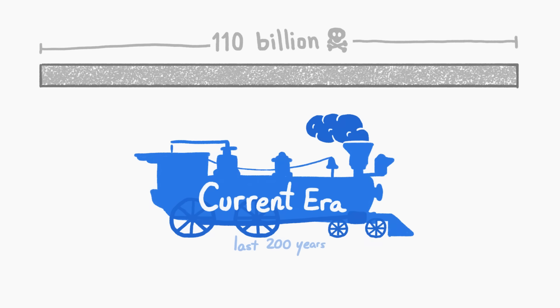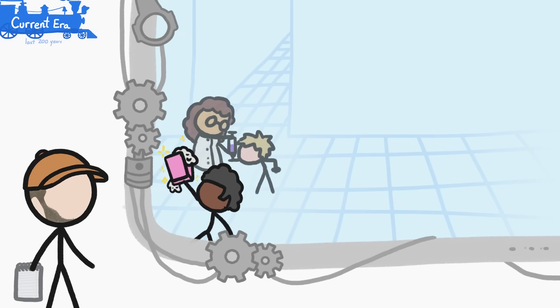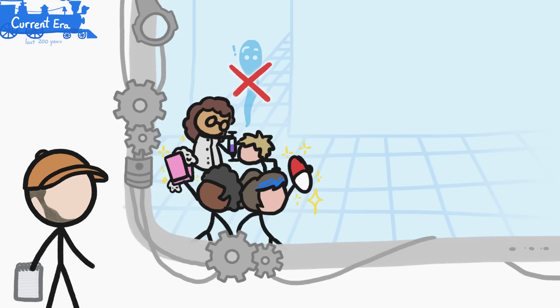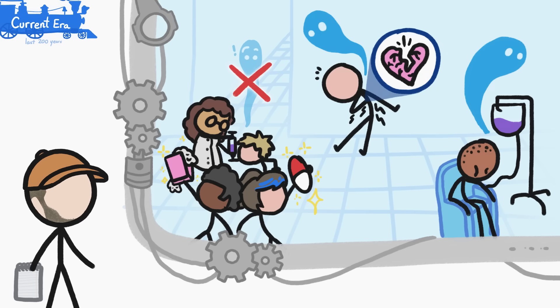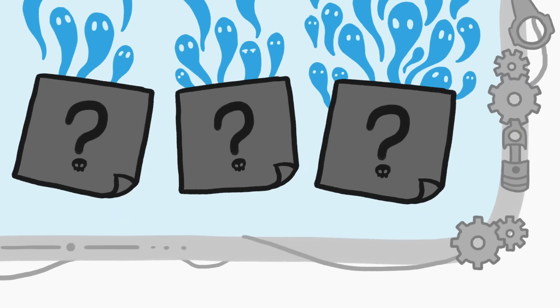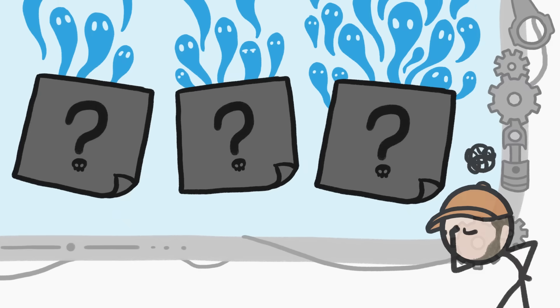In the current era, another 10 billion or so people have died, but mostly from different things. Thanks to widespread use of stuff like soap, vaccines, and antibiotics, we've gotten really good at not dying from most of the threats that haunted earlier eras. Now, things like heart disease and cancer, diseases which tend to kill old people, have become common causes of death. Unfortunately, those three big killers are still an issue.